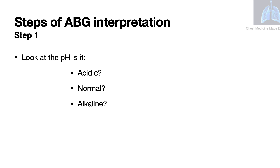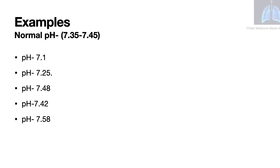So let's go through the steps of ABG interpretation. Step 1: Look at the pH. Is it acidic, normal, or alkaline? We will go through a few examples to make it clear. The normal value of the pH is shown at the top of the screen. The first pH is 7.1 — is it acidic, normal, or alkaline? It is less than 7.35, and therefore it is acidic.